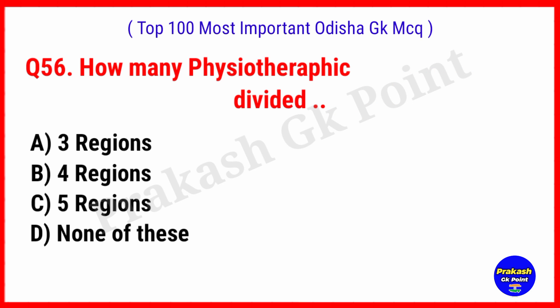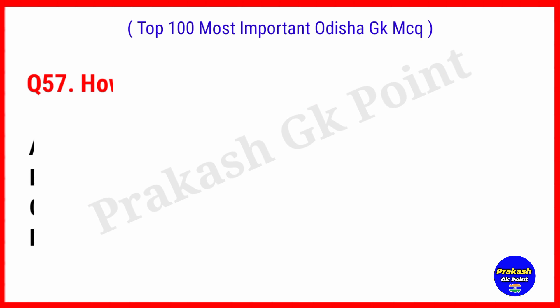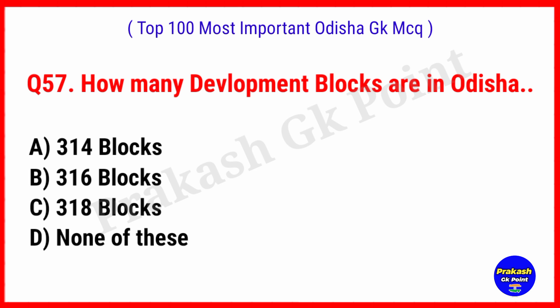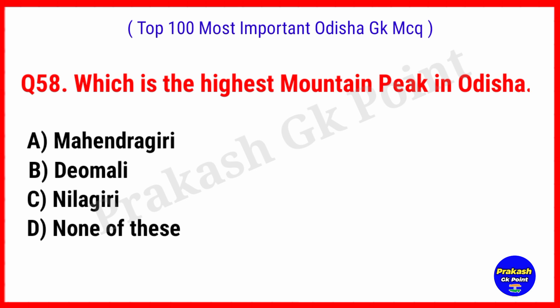How many physiographic regions is Odisha divided into? Answer: Option C, 5 regions. How many development blocks are in Odisha at present? Answer: Option A, 314 blocks.